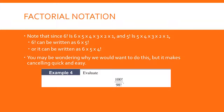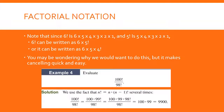For example, we're going to do 100 factorial divided by 98 factorial. Pause the recording, give this a try using the fact we just discussed, and then resume to check your answer. 100 factorial can be written as 100 times 99 times 98 factorial, and we have 98 factorial in the denominator. The two 98 factorials cancel, leaving us with 100 times 99, which is 9,900.